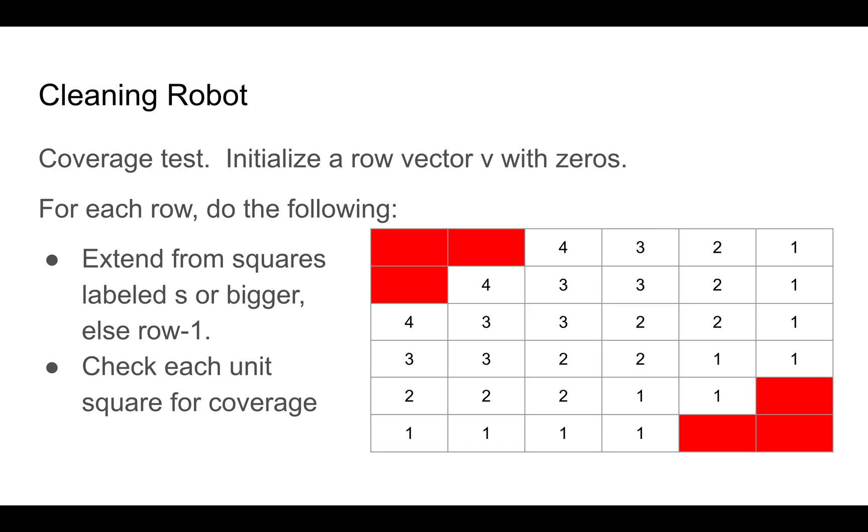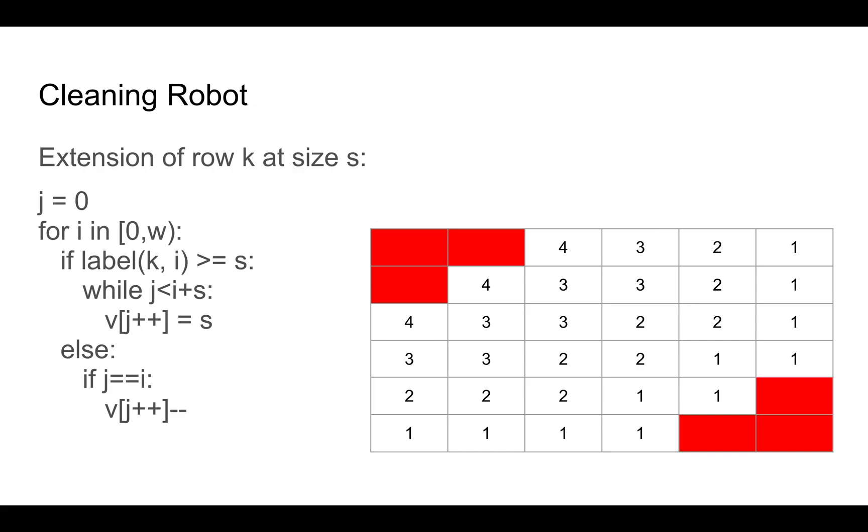Now, this might seem slow, because there could be a lot of squares labeled s or greater, and s might be pretty large. But, if you have a variable that chases ahead of your iterative variable, and keeps track of the last square you marked as s, then this becomes linear. So it's very quick. And the algorithm's here, it's pretty easy, straightforward, standard scan.